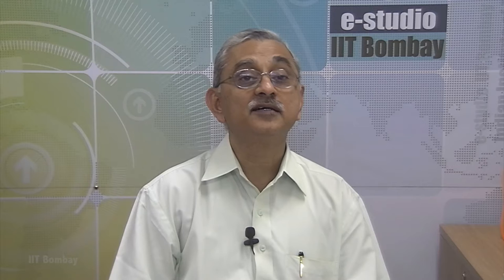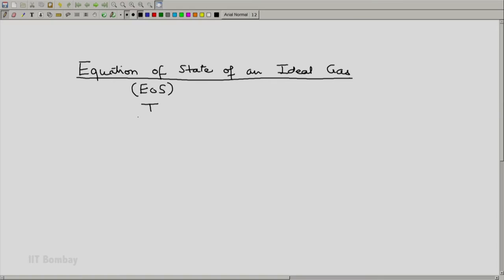We have defined the Kelvin scale of temperature as T by T at the triple point of water, PV divided by PV at the triple point.